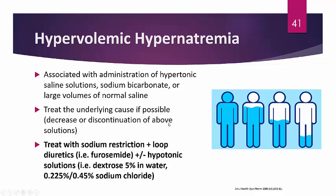Hypervolemic hypernatremia is associated with administration of hypertonic saline solutions, sodium bicarbonate, or large amounts of normal saline — essentially too much sodium in a large volume. Treat by decreasing or discontinuing the offending solution. Restrict sodium and consider a loop diuretic to flush out volume and salt. You may also need a hypotonic solution such as D5W, quarter-normal, or half-normal saline to correct the hypervolemic hypernatremia.